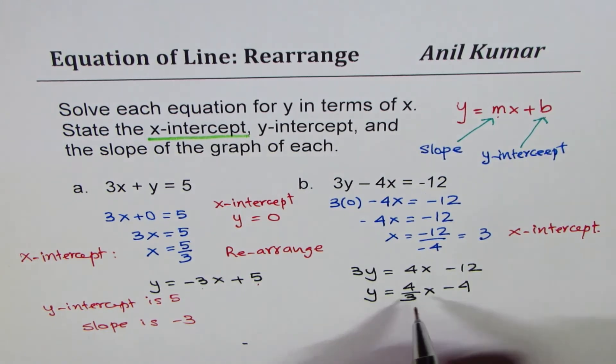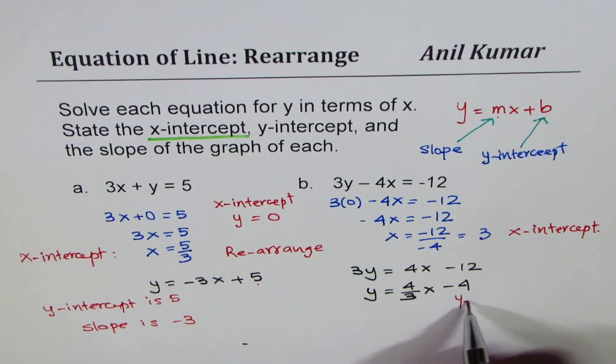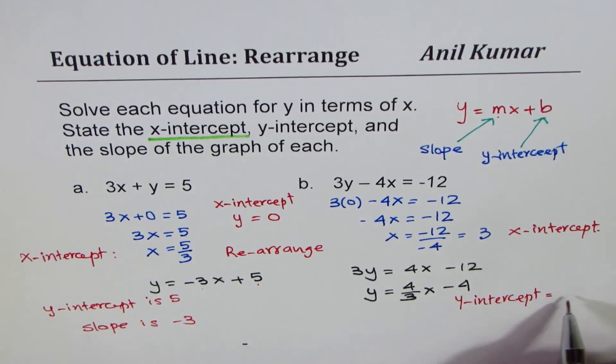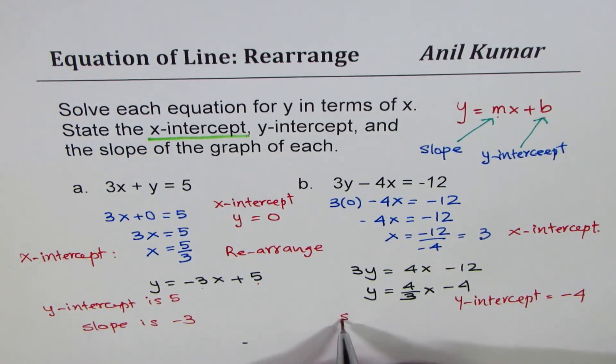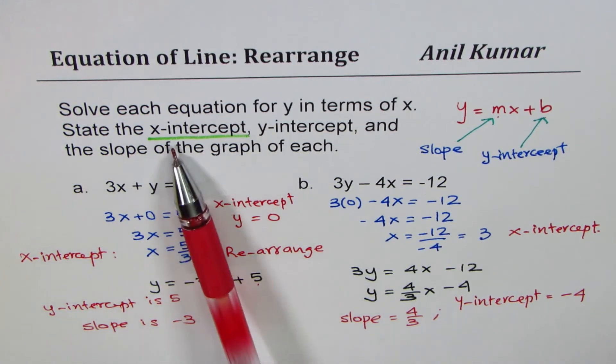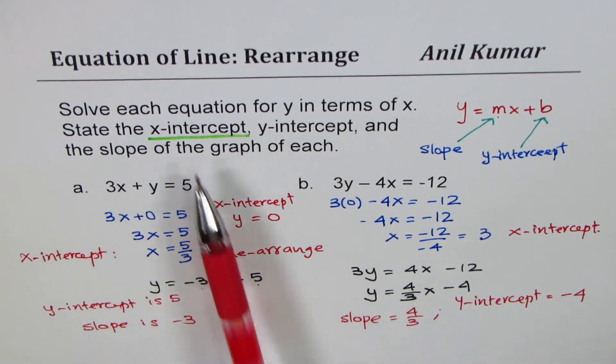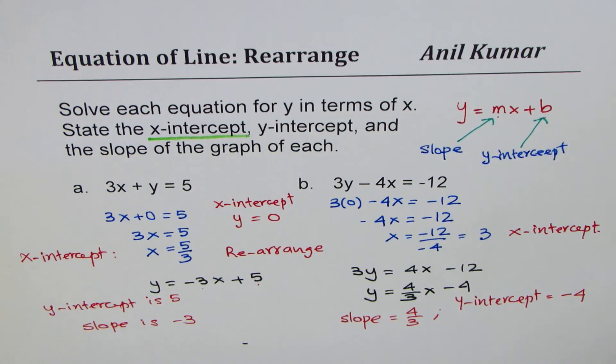So that gives us both the values. What we get here is y-intercept equals to minus 4, and slope equals to 4 over 3. So that is how we can find x-intercept, y-intercept, and slope of the graph from the given equation.